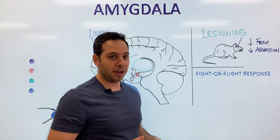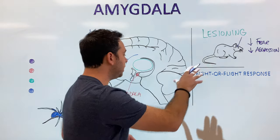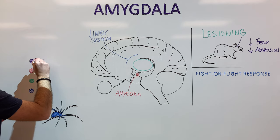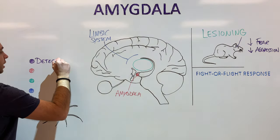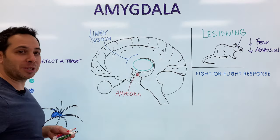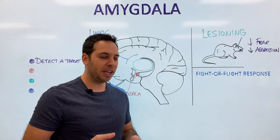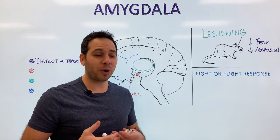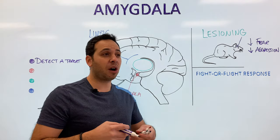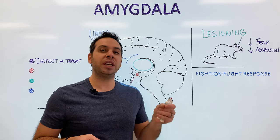Now that we have basic knowledge of the amygdala — where it's located, what system it's part of, and how we know its function — let's get to specific functions. The first is detecting a threat. From an evolutionary perspective, a threat is something that causes us danger, something that impedes our survival. But in 2021, we don't have to worry about a woolly mammoth attacking us, so oftentimes we're afraid of things that aren't really threats. In psychology, we often call this the amygdala hijack.